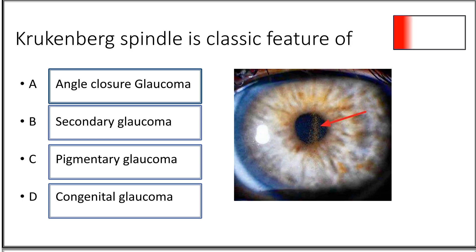Fourteenth question: Krukenberg spindle is a classic feature of — angle closure glaucoma, secondary glaucoma, pigmentary glaucoma, or panretinal glaucoma? It is a classic feature of pigmentary glaucoma. There is rubbing of the iris against the ciliary body zonules, releasing iris pigment which gets deposited on the corneal endothelium. The iris pigments are collected by aqueous currents and form a spindle-like pattern — hence the name Krukenberg spindle.